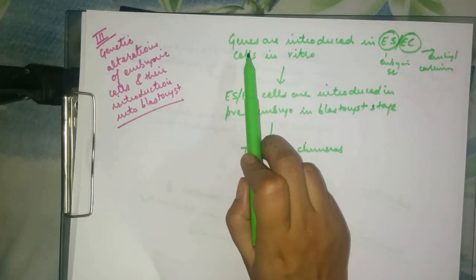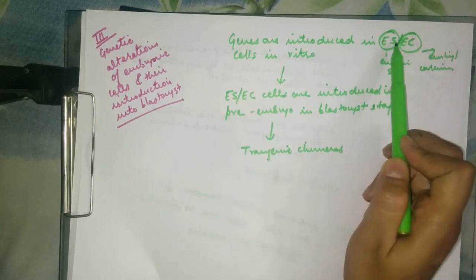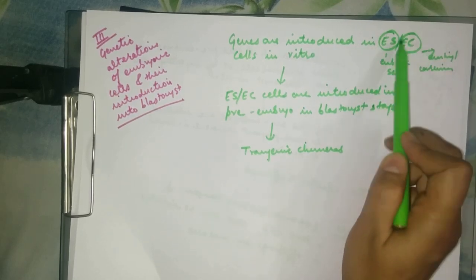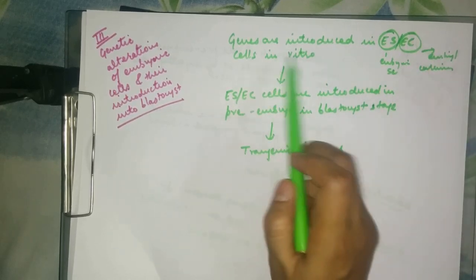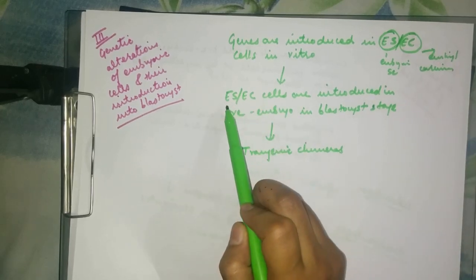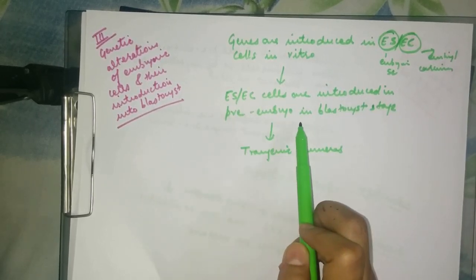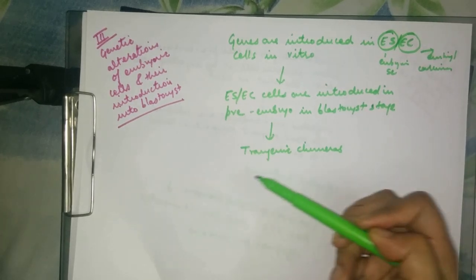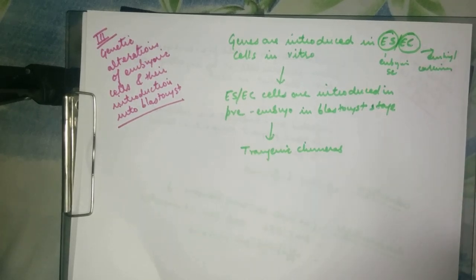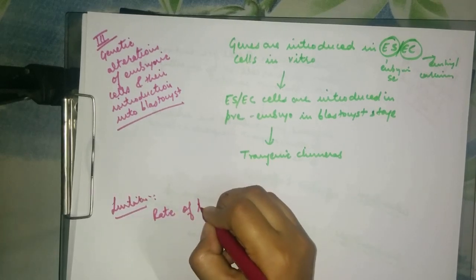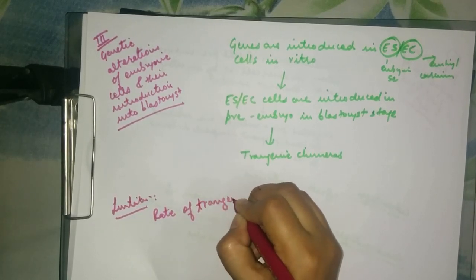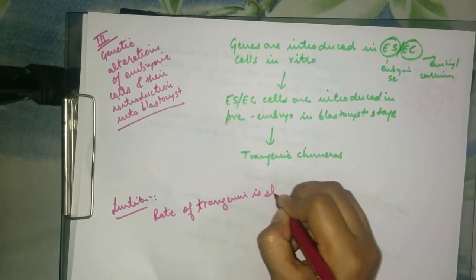The procedure is that genes are introduced into either the embryonic stem cells or the embryonal carcinoma cells in vitro. Then the embryonal stem cells or carcinoma cells are introduced into the pre-embryo in the blastocyst stage, and then we obtain the transgenic chimeras. The limitation of this method is that the rate of transgenesis is slow.